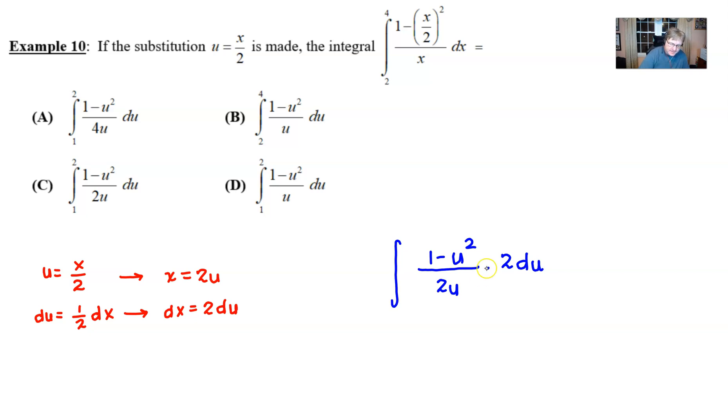Now what that's going to cause is a pair of twos will cancel and so we have an integrand of 1 minus u squared over u with respect to du. Well the problem with that is if we feel pretty confident that we can get rid of choices a and c both b and d show those integrands but b and d have different boundaries so to figure out which one's correct we just figure out what is our new boundaries in terms of u.